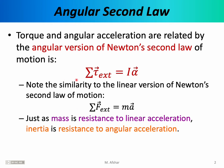We'll refer to this as the angular version of Newton's second law of motion. The important thing is that this formula is often used in the same way Newton's second law was used: we used Newton's second law to calculate the acceleration of an object and then used kinematic equations to find its velocity and position. We'll use this formula similarly — to find the angular acceleration of an object and then use angular kinematics to find its angular velocity and angular position.